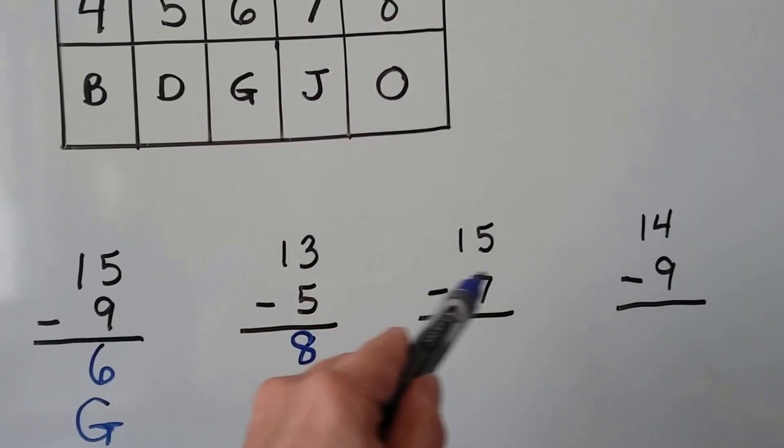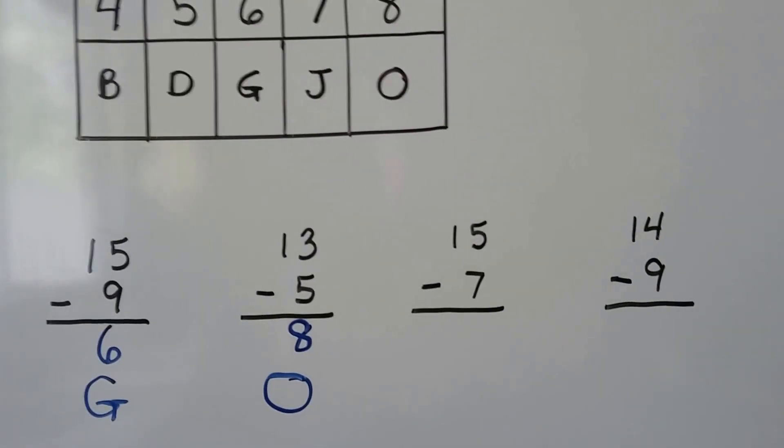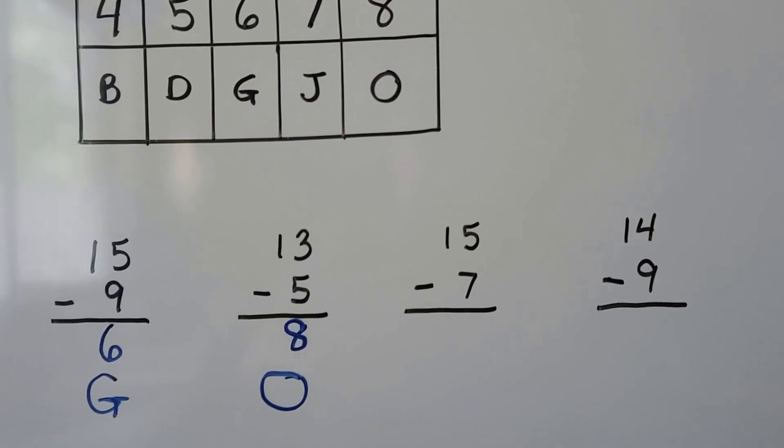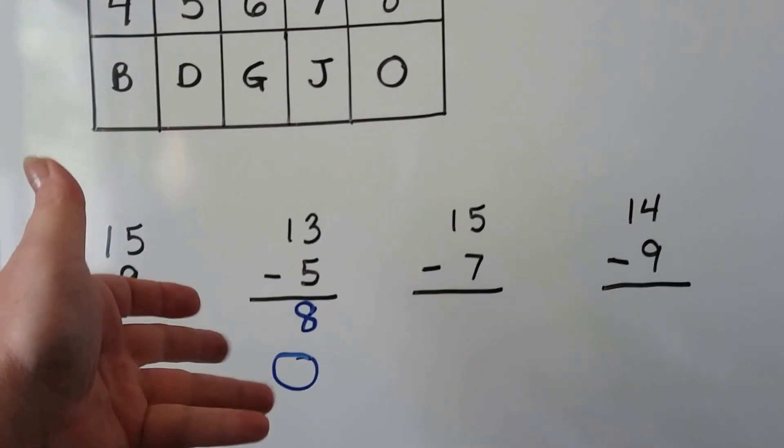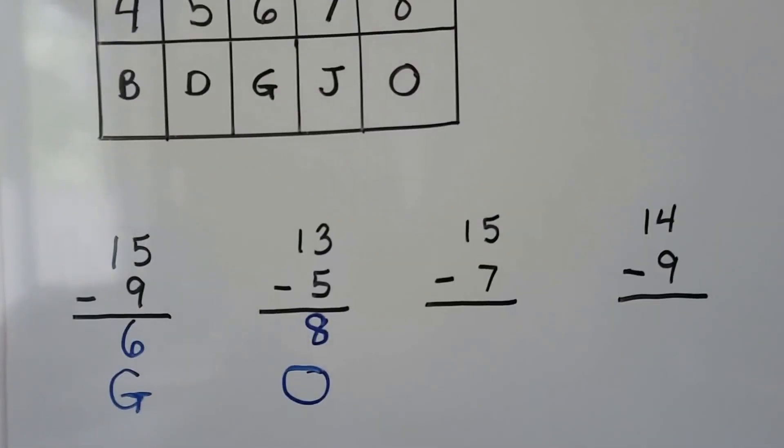Now we have 15 minus 7. We can count back or we can count on. 15, 14, 13, 12, 11, 10, 9, 8, 7. That's 8 fingers, so we have another O. Can you figure out what it's going to say already?